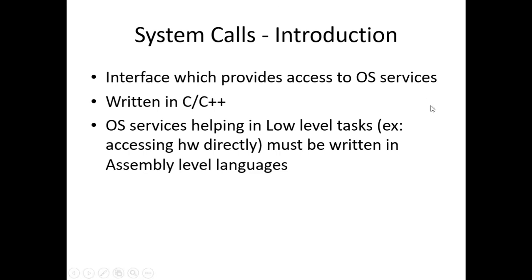In part 9 we already talked about the various services offered by operating systems. In order to access these services, there must be some way for user programs to access them directly. System calls provide that interface — they are functions or routines written in C or C++, and sometimes in assembly language for low-level tasks like accessing hardware, registers, or memory directly.